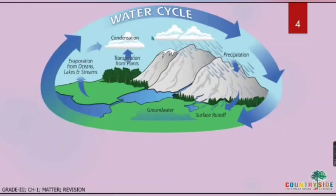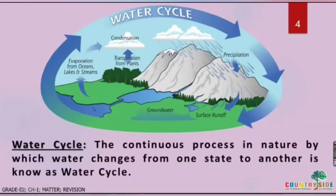After condensation, clouds form. When these clouds become very heavy due to water droplets, the water droplets come down in the form of rain. That process is called precipitation. The water cycle is a very important example of changing states of matter. The definition of water cycle: the continuous process in nature by which water changes from one state to another is known as the water cycle. Here we completed the first chapter.